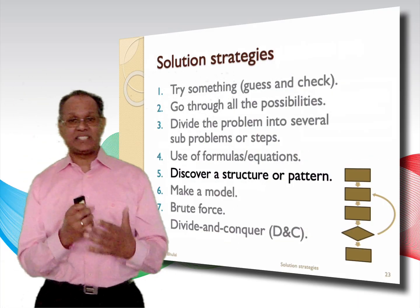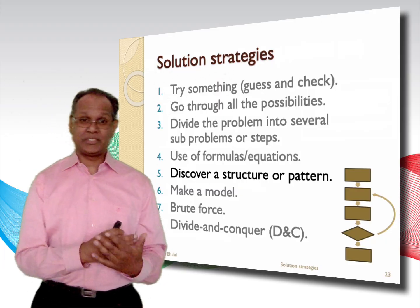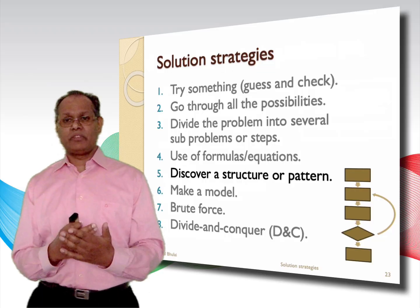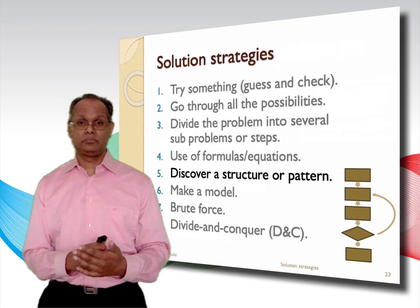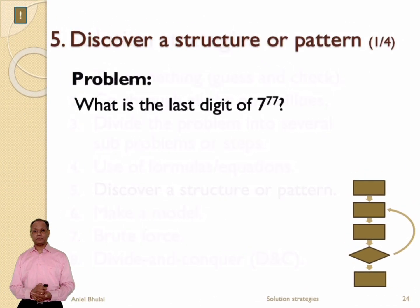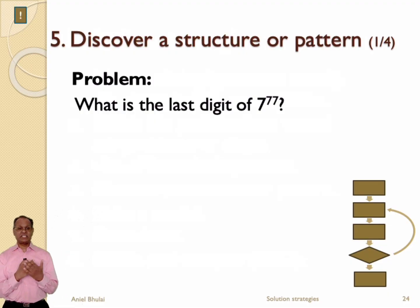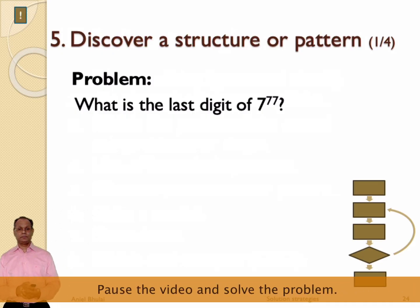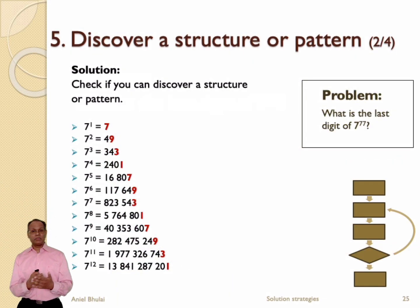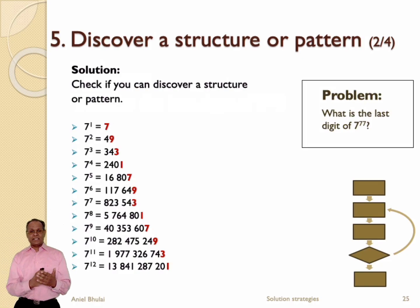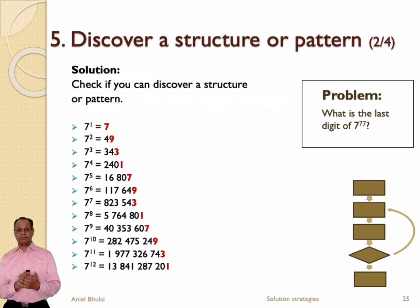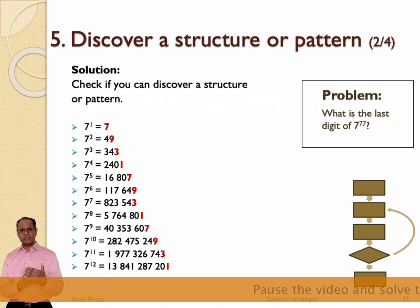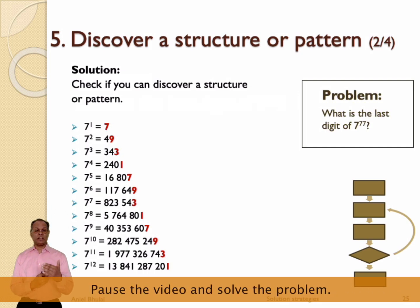The next solution strategy in the list is called the discover a structure or pattern solution strategy. Sometimes a problem can be solved by discovering a structure or pattern in the problem. Take the following example in which we want to know the last digit of 7 to the power of 77. You might want to pause the video and try to solve this problem yourself first. On this slide, I have written the results of the first 12 powers of 7. Pause the video and try to find out what you notice in the last digits of the first 12 powers of 7.